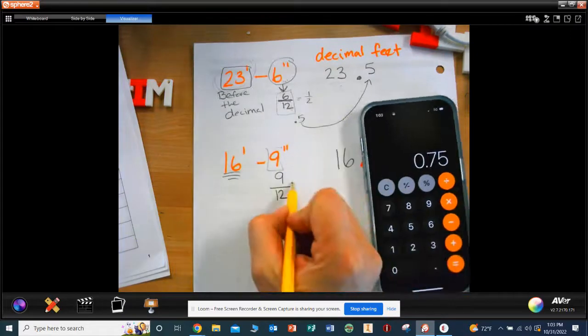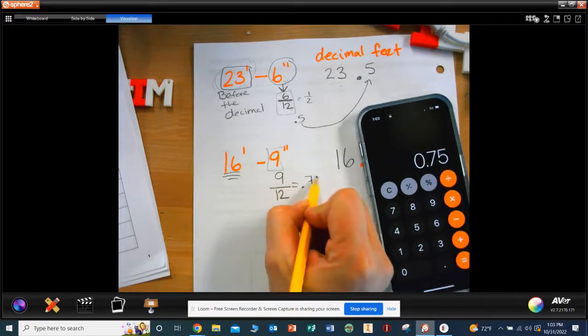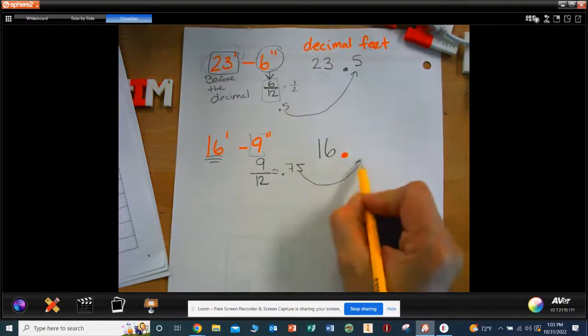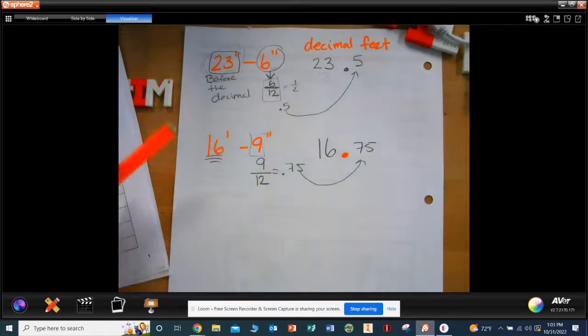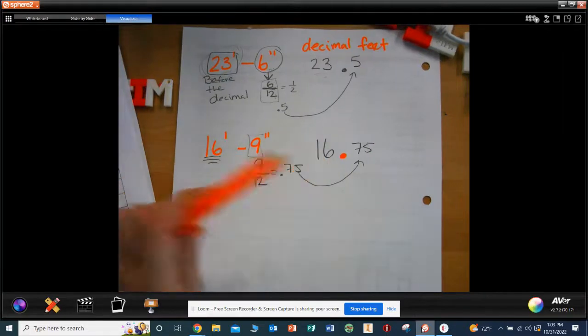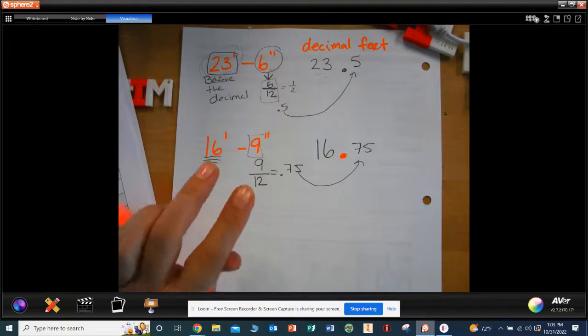9 divided by 12 equals 0.75. Do it on your calculator so you also get the same answer. So where do I put this 0.75? Behind the decimal. So the decimal feet of 16 feet 9 inches is equal to 16.75.